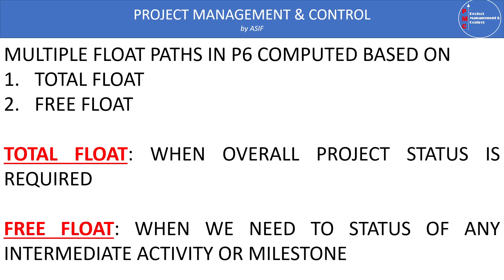For free float, we use it when we need to know the status of any intermediate activity. For example, if our project consists of five buildings A, B, C, D, and E, and the project is overall delayed because of building A, but the client or engineer wants to know the status of the other buildings — how they are progressing, what their float path is — in this case we use free float to compute the float path for those other buildings based on their own completion.